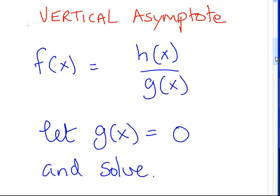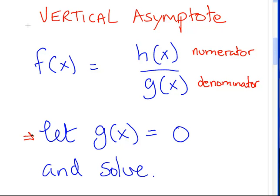I have my function here, f of x, and I have my numerator. Let's suppose it is comprised of two parts — two sub-functions — a numerator and a denominator: h of x being the numerator, g of x being the denominator. To find the vertical asymptote of f of x, what I do is let g of x, which is the denominator, equal to zero and solve for x.